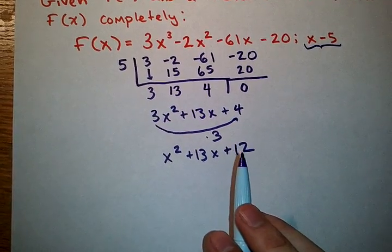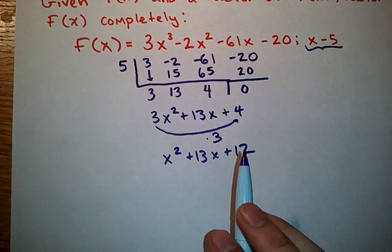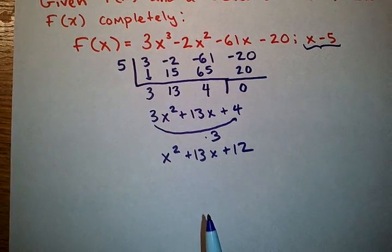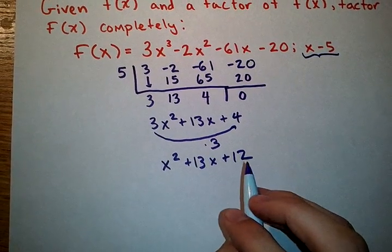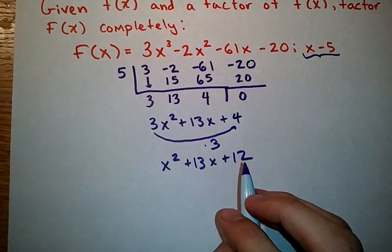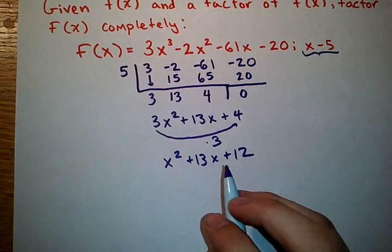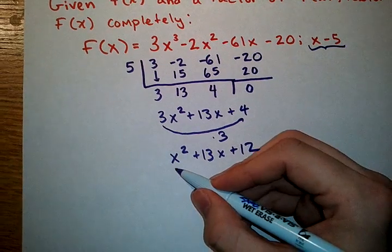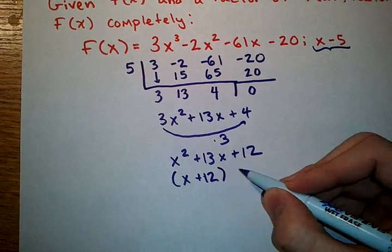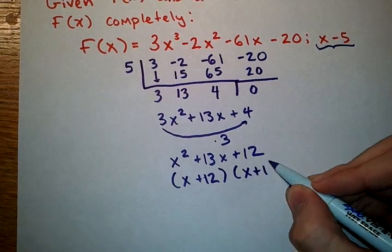So we're looking for what multiplies to give me 12, that at the same time adds to give me 13. Now, we could list all these factors out, but it's pretty easy to see that 12 times 1 gives us 12, and 12 plus 1 gives us 13. Those are my two factors. x plus 12, x plus 1.